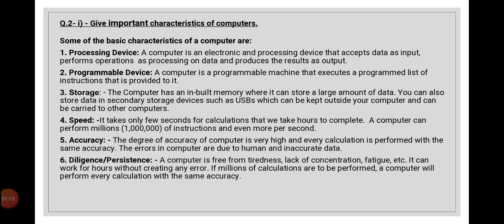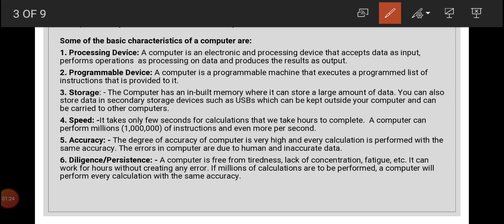The third feature is that the computer has the capability of storage — it stores data temporarily or permanently. Primary data is stored in the computer's main memory, and there are also storage devices attached to the computer. Another feature of the computer is that it processes data at very high speed.